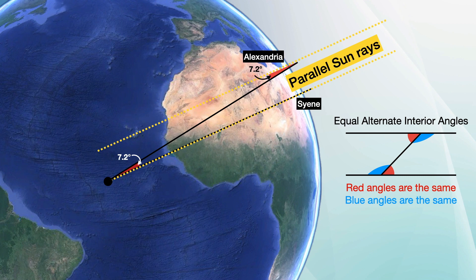Because a line intersecting two parallel lines has equal alternate interior angles, the shadow angle at Alexandria is the same as the angle between Alexandria and Syene at the center of the earth.